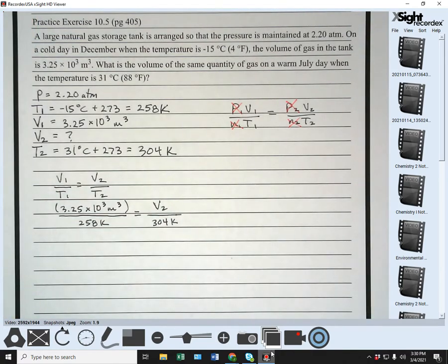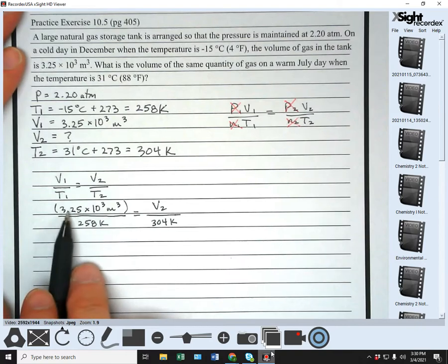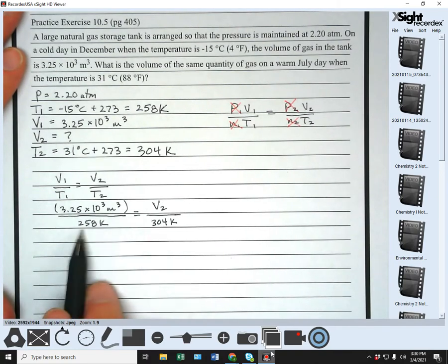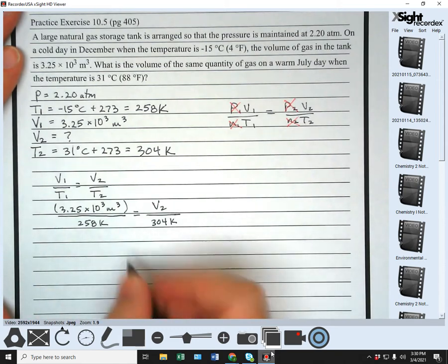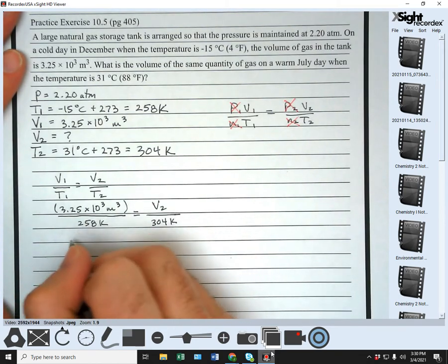We just solve. So multiply 3.25 times 10 to the third times 304 divided by 258. And this kicks us out to three significant figures,